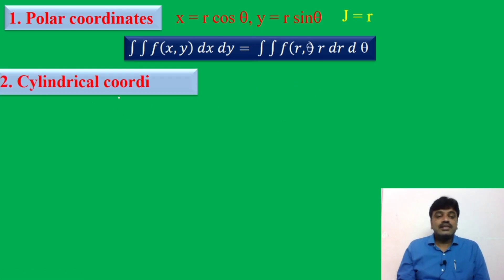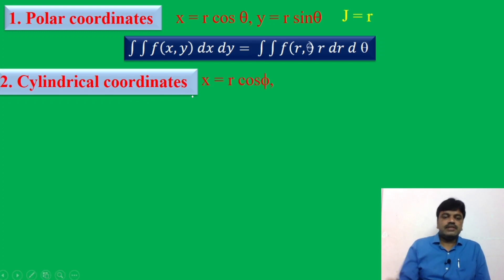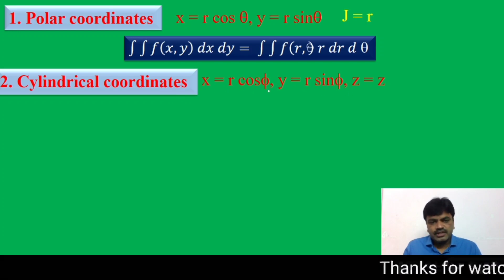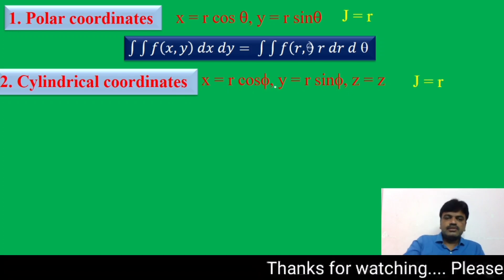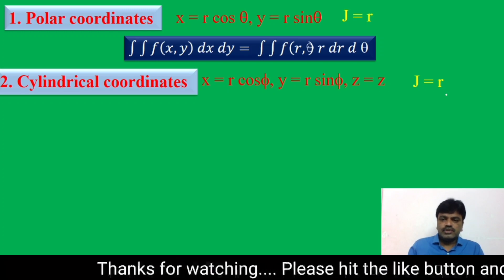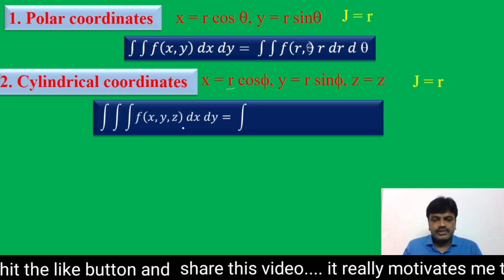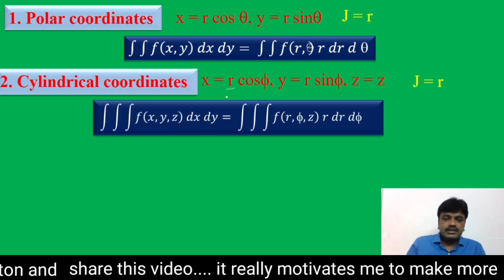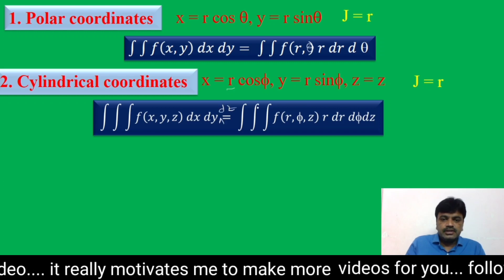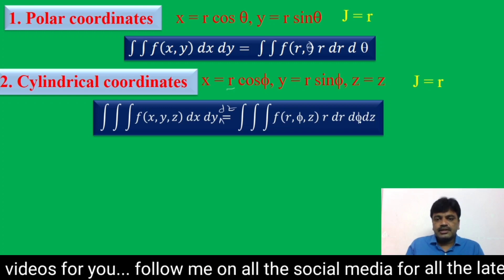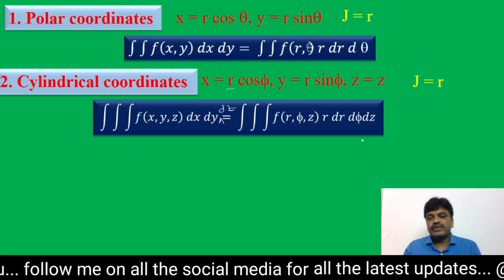For cylindrical coordinates, x = r cosφ, y = r sinφ, z = z. Here also the Jacobian J equals r. So ∭f(x,y,z) dx dy dz = ∭f(r, φ, z) r dr dφ dz.